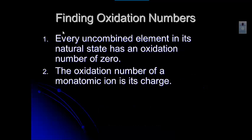These are the rules — write them down to find oxidation numbers. Every uncombined element in its natural state has an oxidation number of zero. So something like silver (Ag), or oxygen, whose natural state is O₂, a diatomic molecule — those would have an oxidation number of zero.